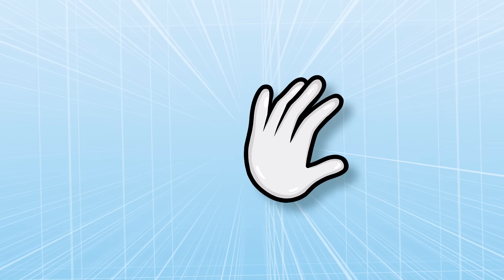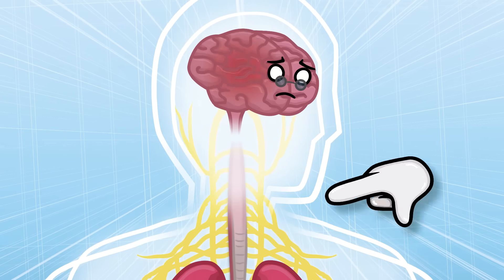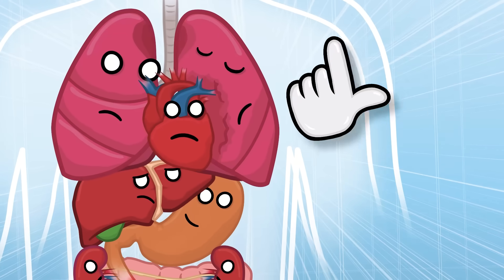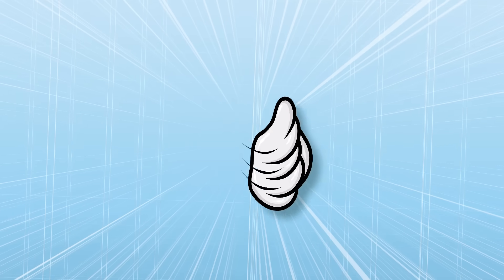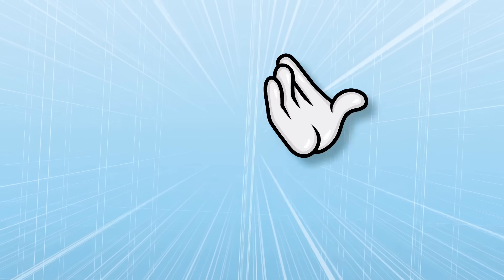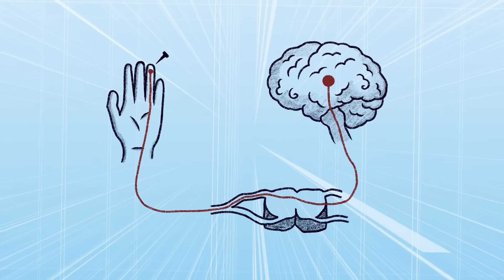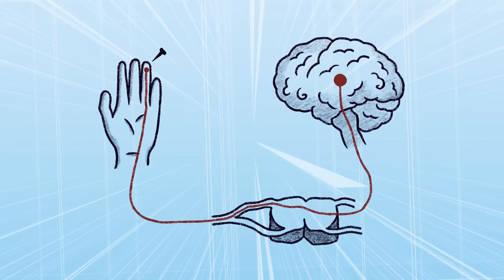Well, pain is a complex phenomenon that involves multiple processes in the nervous system. What do you mean, doctor? When there's tissue damage or inflammation, specialized nerve cells called nociceptors in the affected area are activated and send electrical signals to the spinal cord and brain.